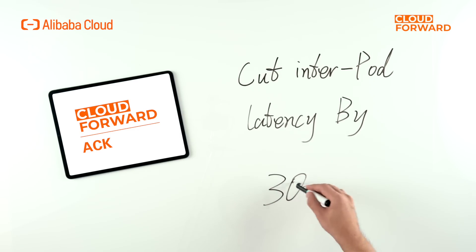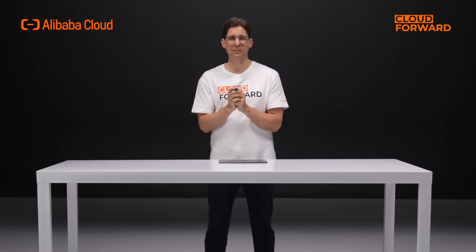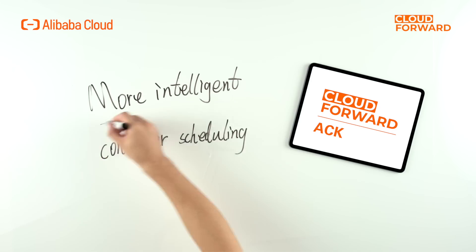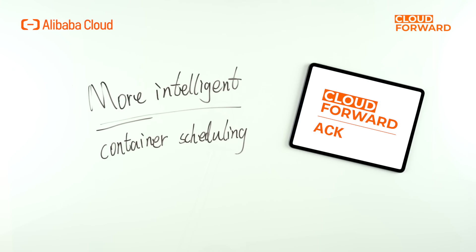It also supports Turway, a high-performance network, and uses hardware offload and eBPF technology to cut inter-pod latency by 30%. What's more, ACK is full-stack optimized based on bare-metal architecture, heterogeneous architecture, Alibaba Cloud Linux, and other technologies. Meanwhile, ACK offers more intelligent container scheduling.